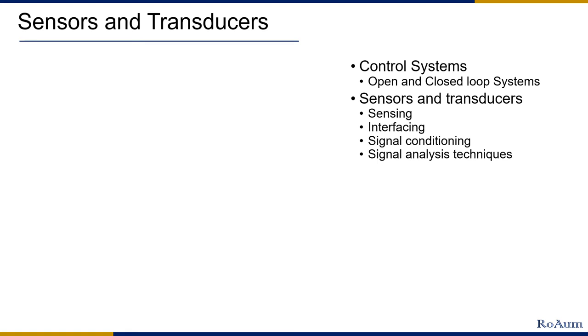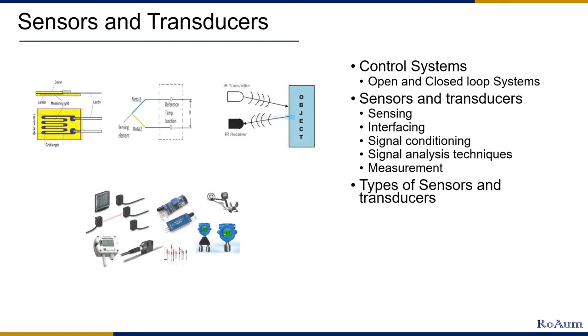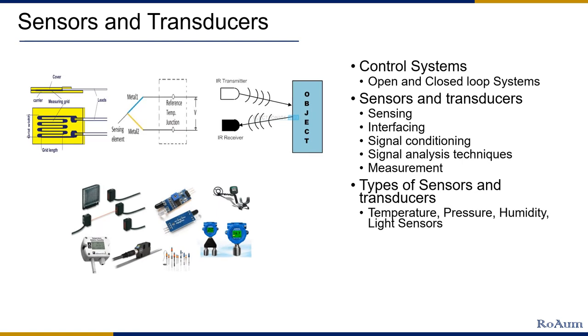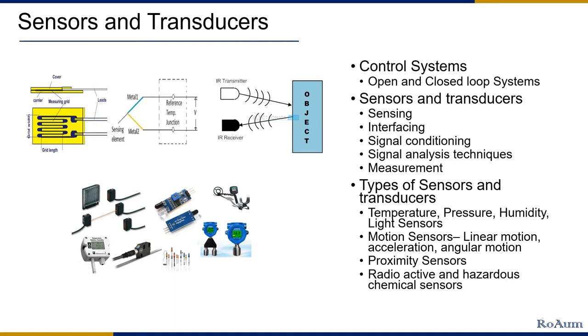As the electrical signals are weak, they are processed, enhanced and converted to digital values. Measurement where the converted digital values are further processed to derive intelligence out of signal variations which helps the software to make decisions. There are various types of sensors and transducers, temperature, pressure, humidity, light sensors, motion sensors for detecting linear motion, acceleration, angular motion, proximity sensors and special sensors for detecting extremely high temperature, hazardous chemicals and radio activity.